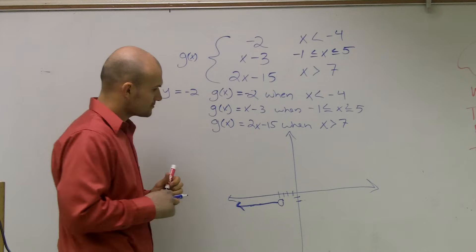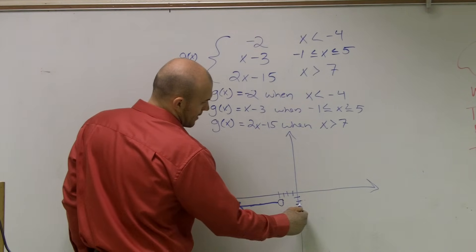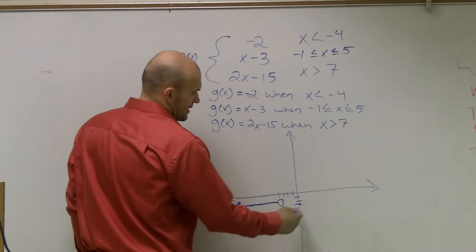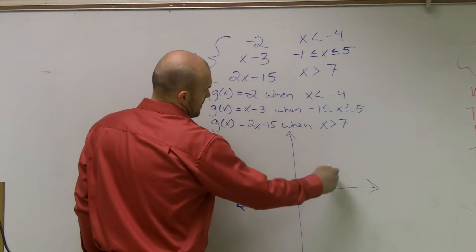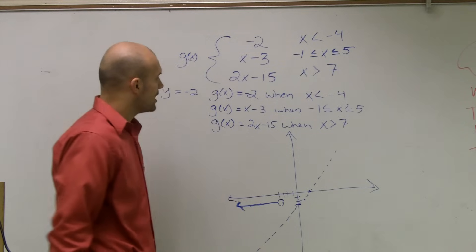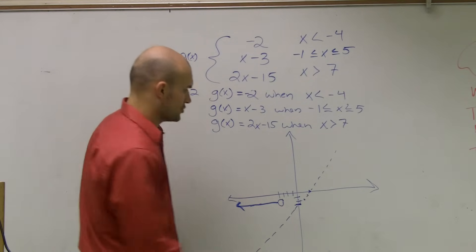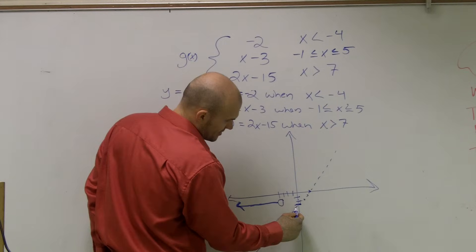The next one, x minus 3, I need to graph that. So that crosses at a y-intercept of negative 3 and has a slope of 1 over 1. So that looks something like that. Now, that graph is only true between negative 1 and since it's now less than or equal to, that's going to be a solid dot.